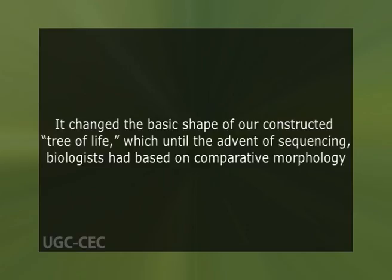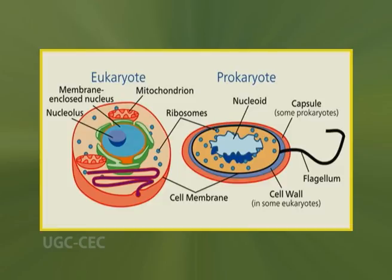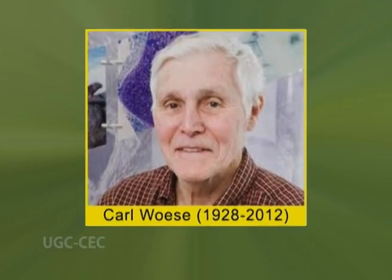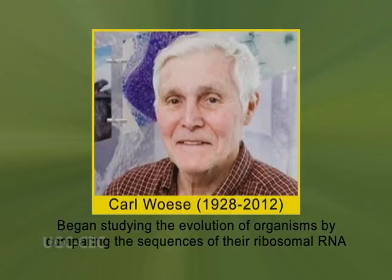The introduction of DNA-based studies made a tremendous impact on evolutionary biology, changing the basic shape of the constructed tree of life, which until the advent of sequencing biologists had based on comparative morphology. For most of the last 150 years, biologists divided organisms into two main groups: eukaryotes, which had their DNA contained within a membrane-bound nucleus, and prokaryotes — organisms without a nucleus, mostly bacteria. However, in the 1970s, Carl Woese began studying the evolution of organisms by comparing the sequences of their ribosomal RNA.